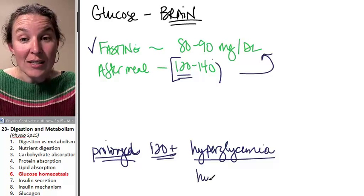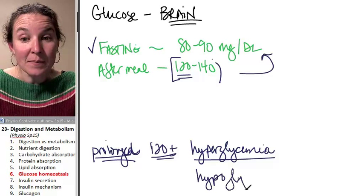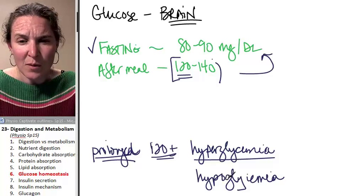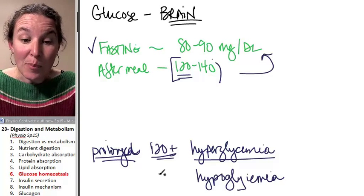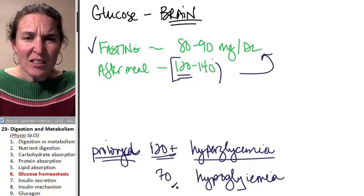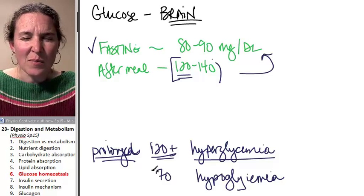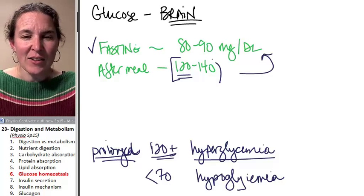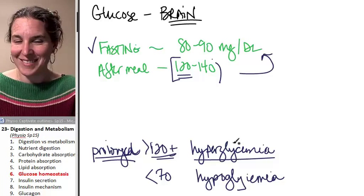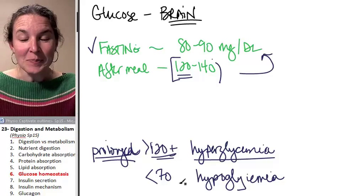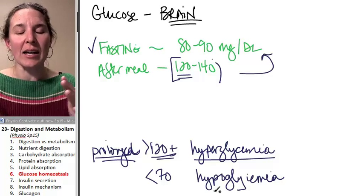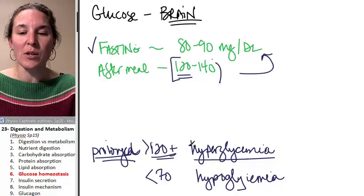You can have hypoglycemia, and hypoglycemia is less than 70. Less than 70 for hypoglycemia, greater than 120 for hyperglycemia. So if your glucose levels drop below 70 for prolonged periods of time, you can have hypoglycemia.